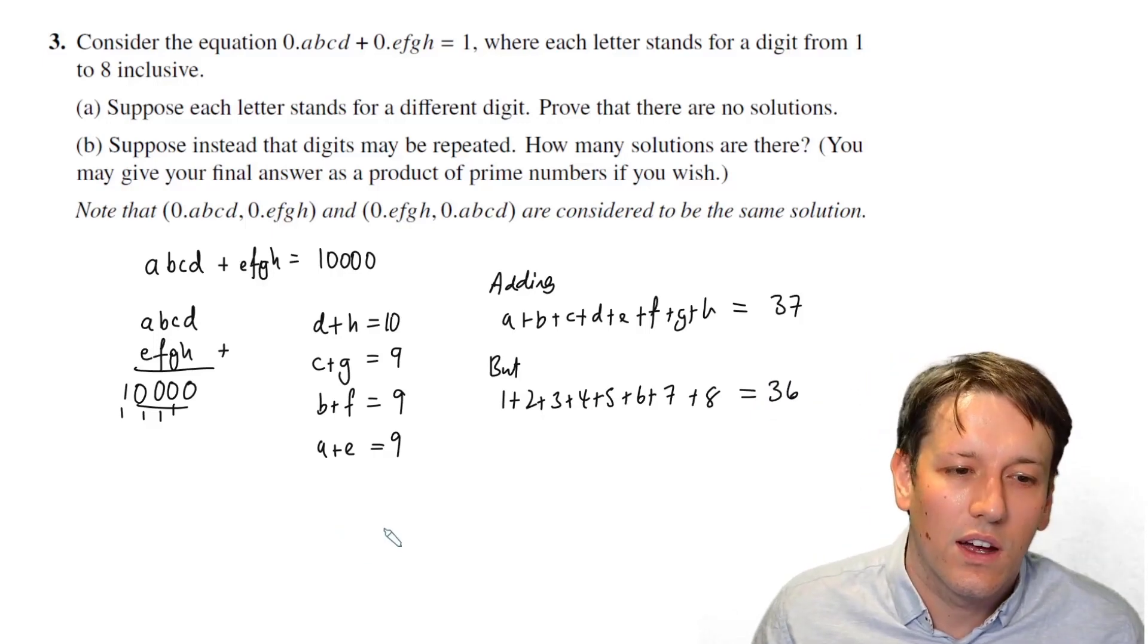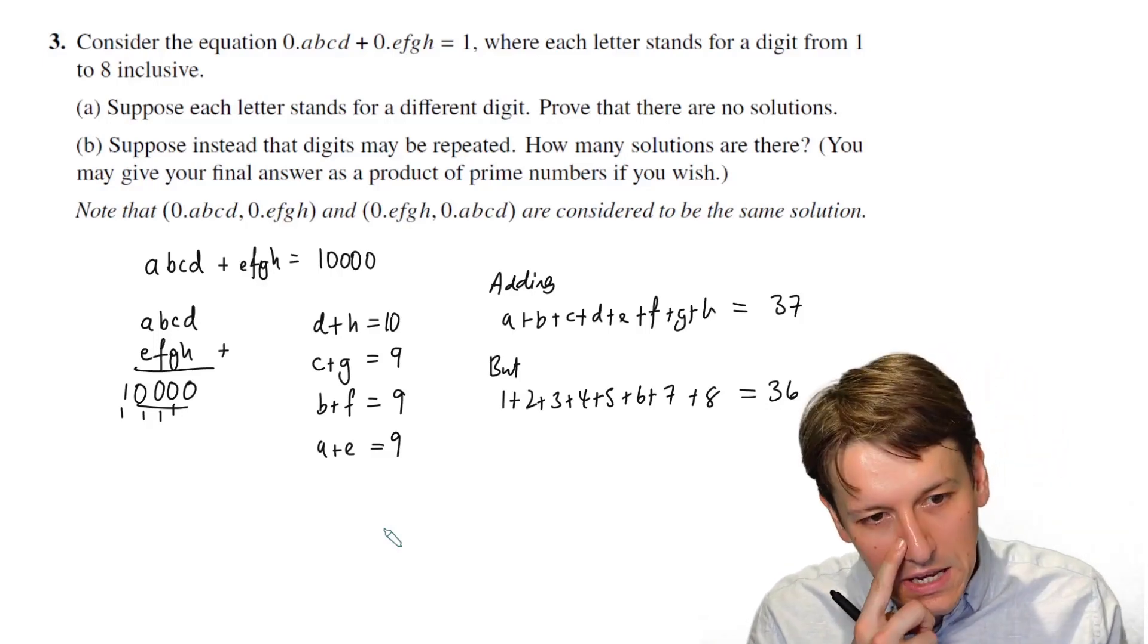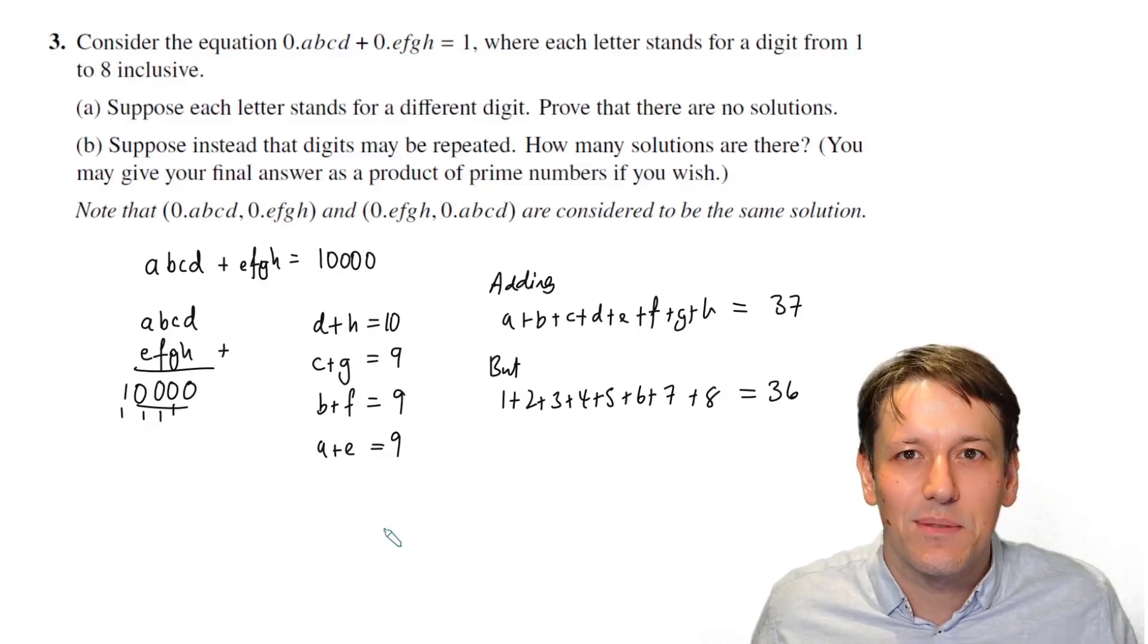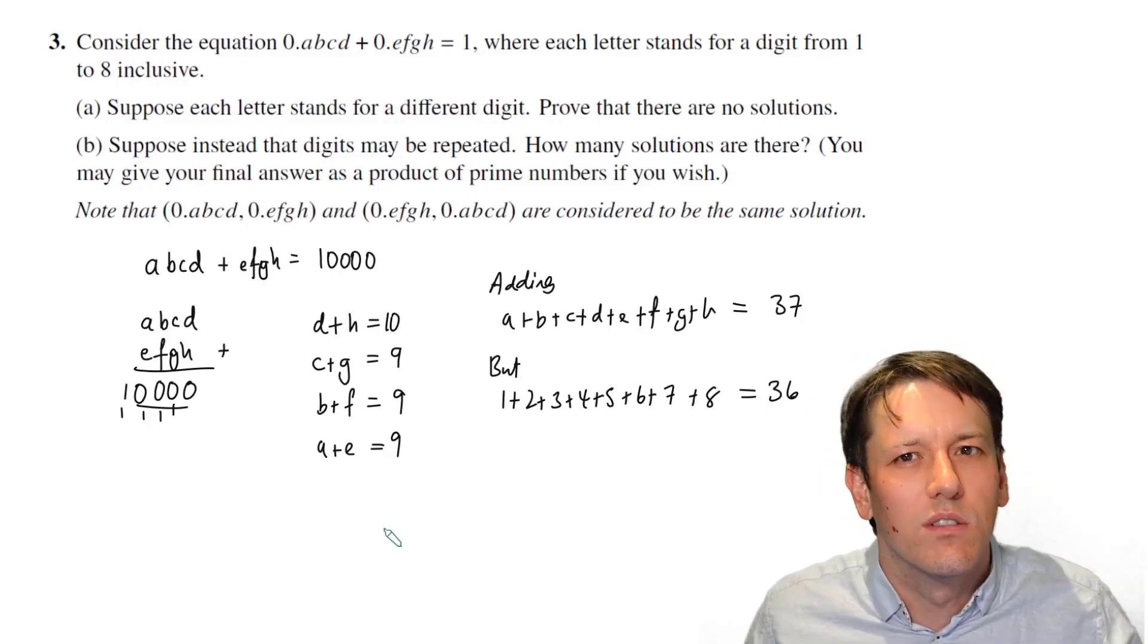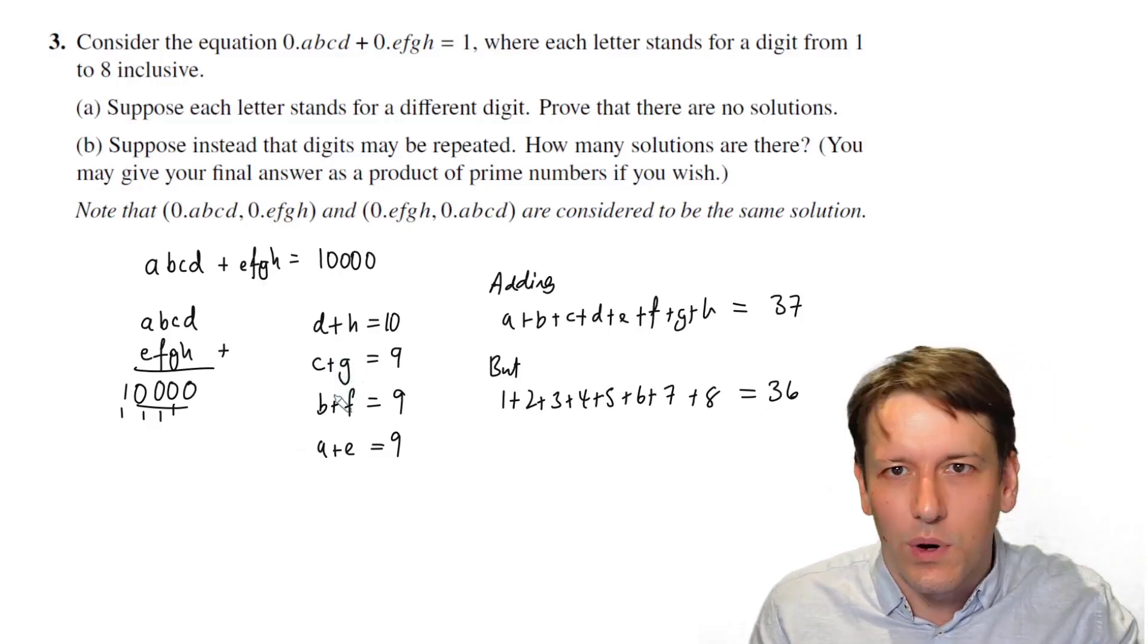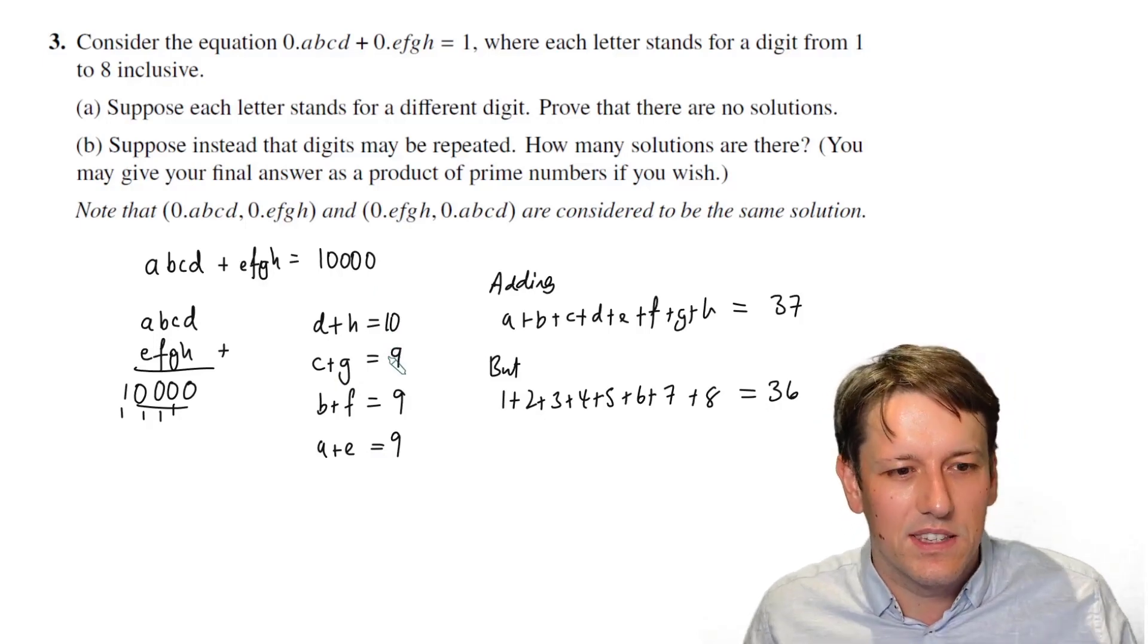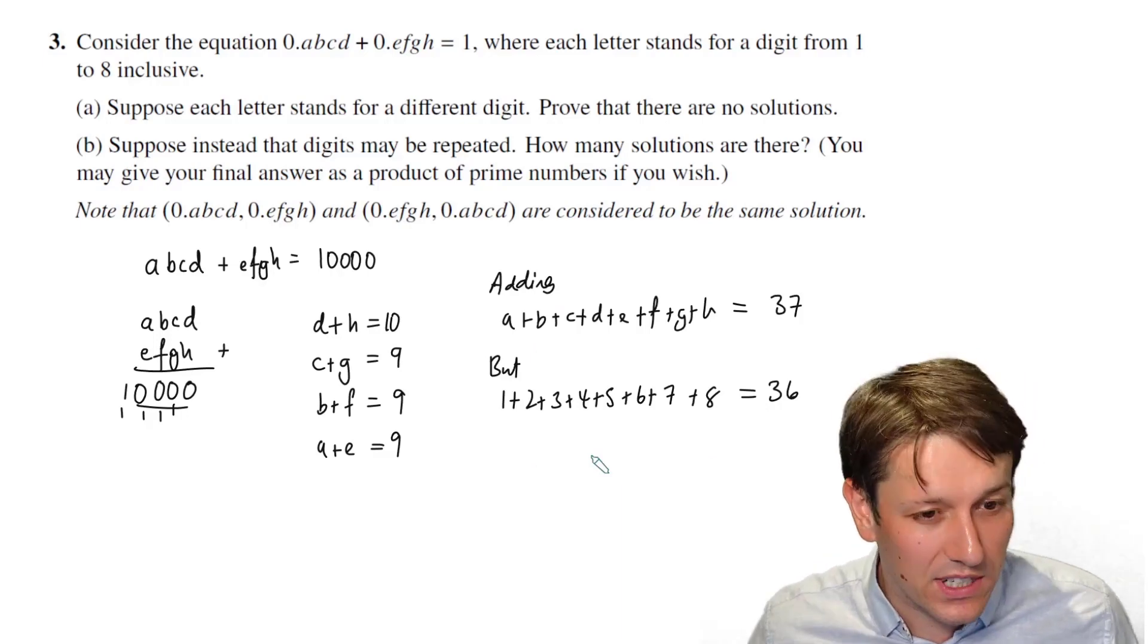So this actually shows that it's impossible. I can't assign each of these numbers to A to H in such a way that they add together to give 37, because however I do it, they're all going to add together to give 36. You could also consider the different pairs that add together to give 9, and say if I make them 1 and 8, 2 and 7, and 3 and 6, I've only got 4 and 5 left, and they add together to give 10. But it's kind of the same as this argument, and I think this way I've written it down here is a much neater way of expressing that, actually.